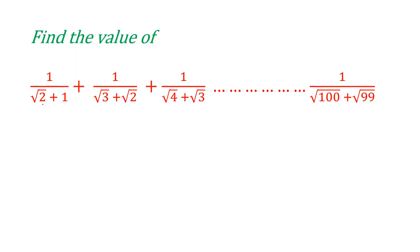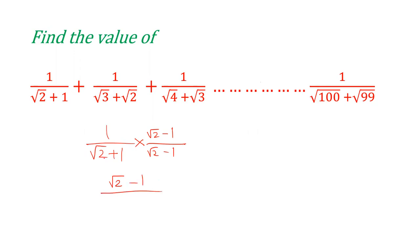Let me explain: if the denominator is an irrational number like 1 by (root 2 + 1), we should rationalize the denominator by multiplying its conjugate — (root 2 − 1) upon (root 2 − 1). So (root 2 + 1) multiplied by (root 2 − 1) gives a² − b², making the denominator 2 − 1 = 1. The numerator becomes root 2 − 1, so that term simplifies to root 2 − 1.